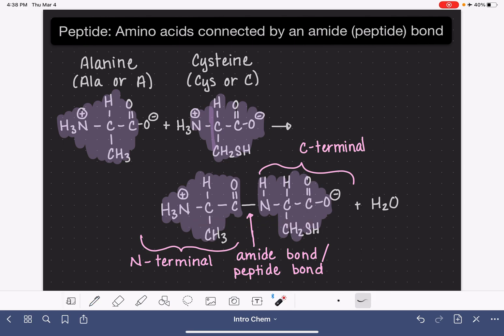Let's start with the three-letter abbreviation. We write the three-letter abbreviations back to back with the first letter capitalized and the other two lowercase, separating each amino acid with a dash. We write the N-terminal amino acid on the left and work our way towards the C-terminal amino acid on the right.